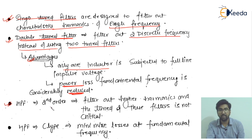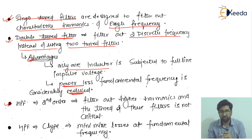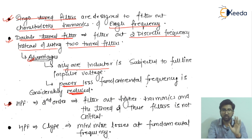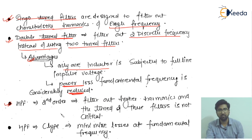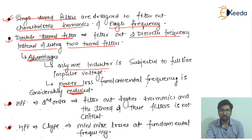For the second order high-pass filter, it filters out higher harmonics by operating above a cutoff frequency. Above that cutoff frequency, it filters out unwanted frequencies. The tuning of these filters is not critical, which is an important point to remember.